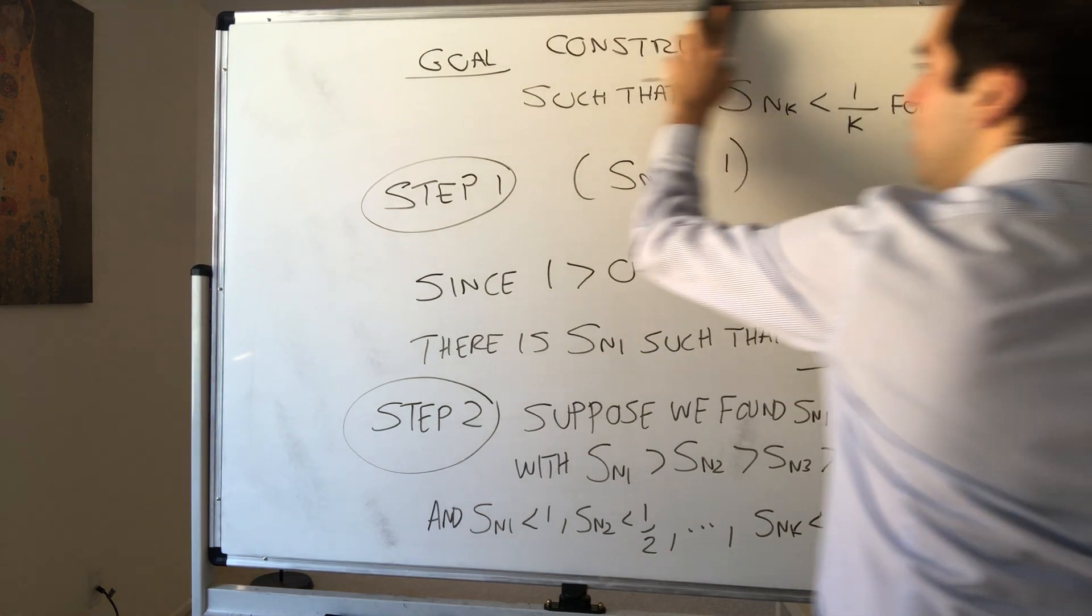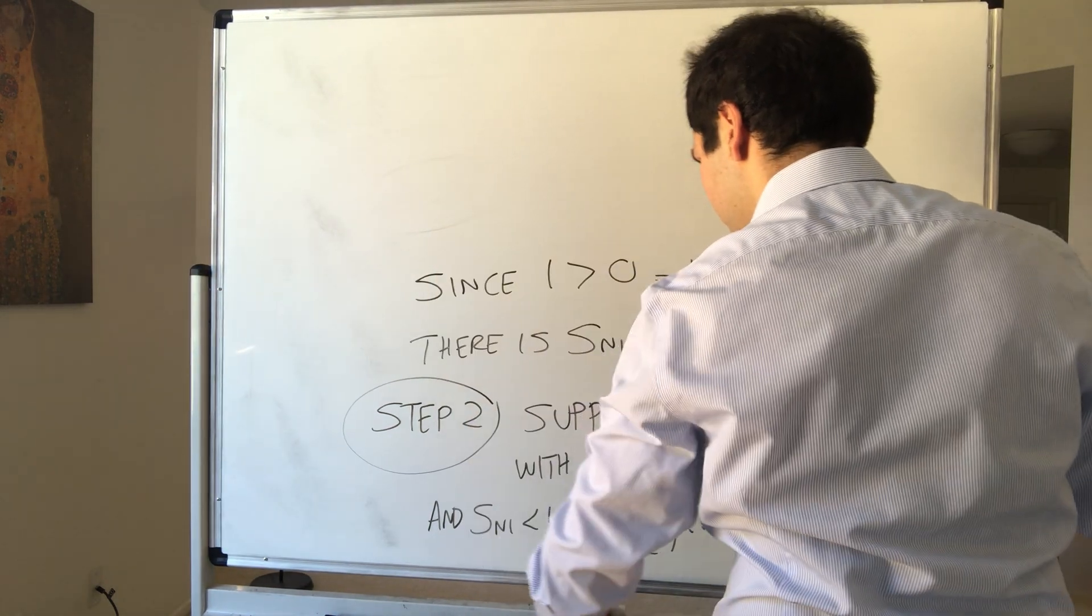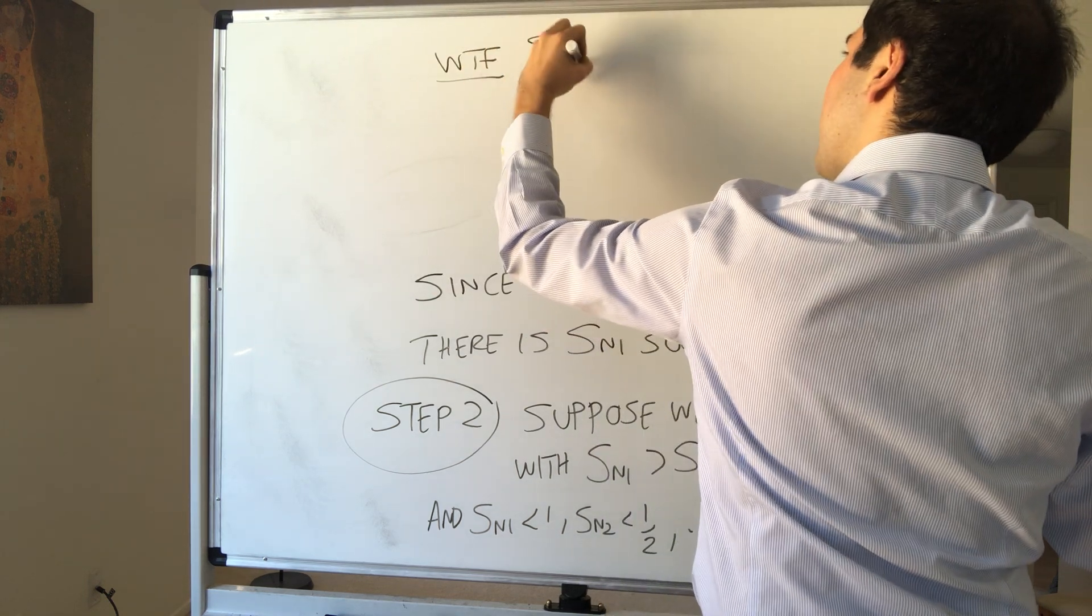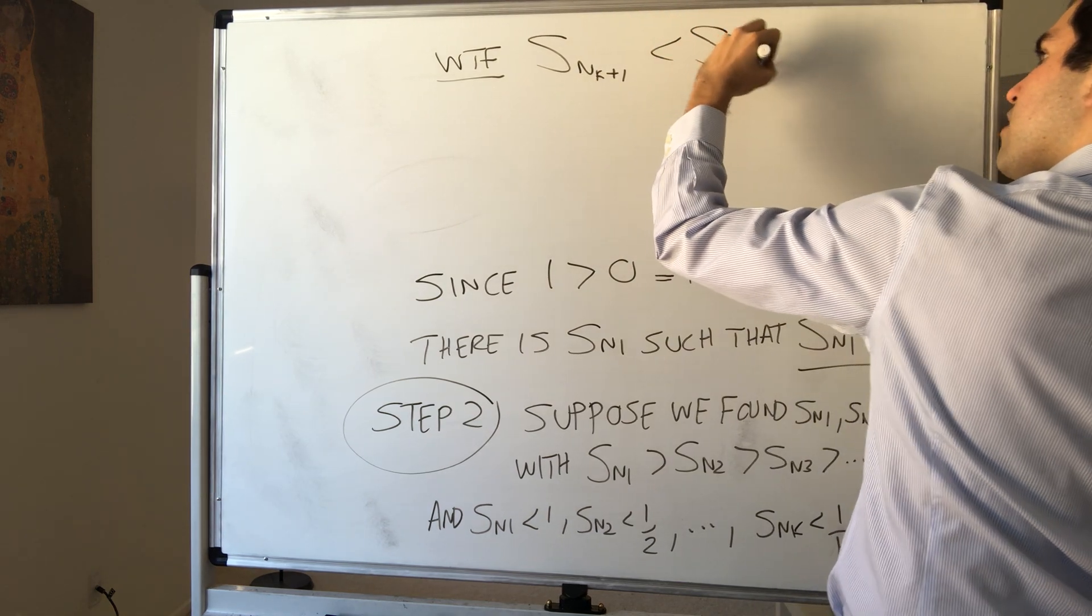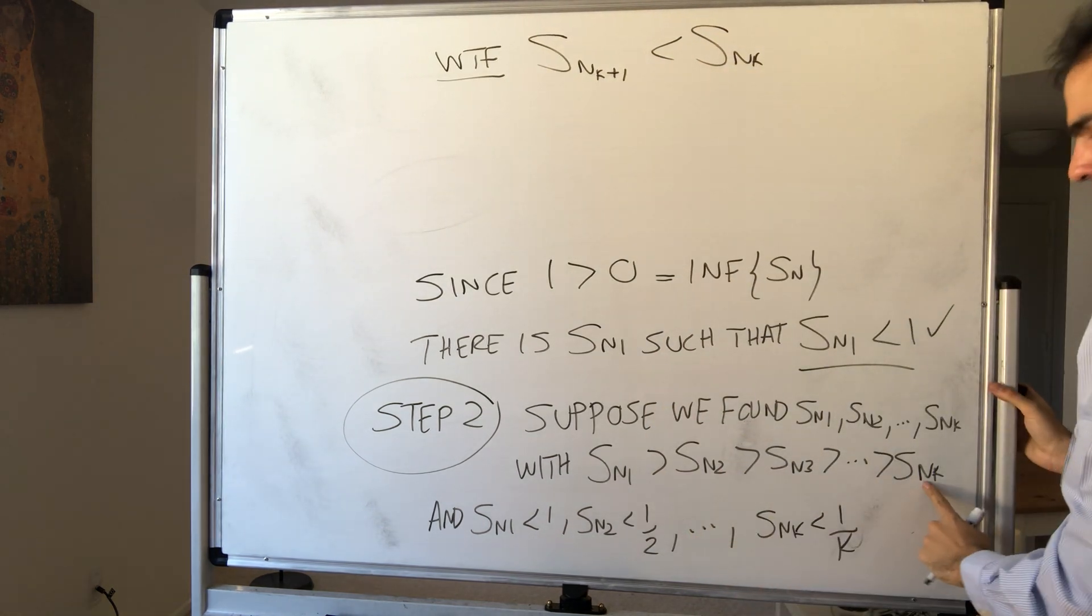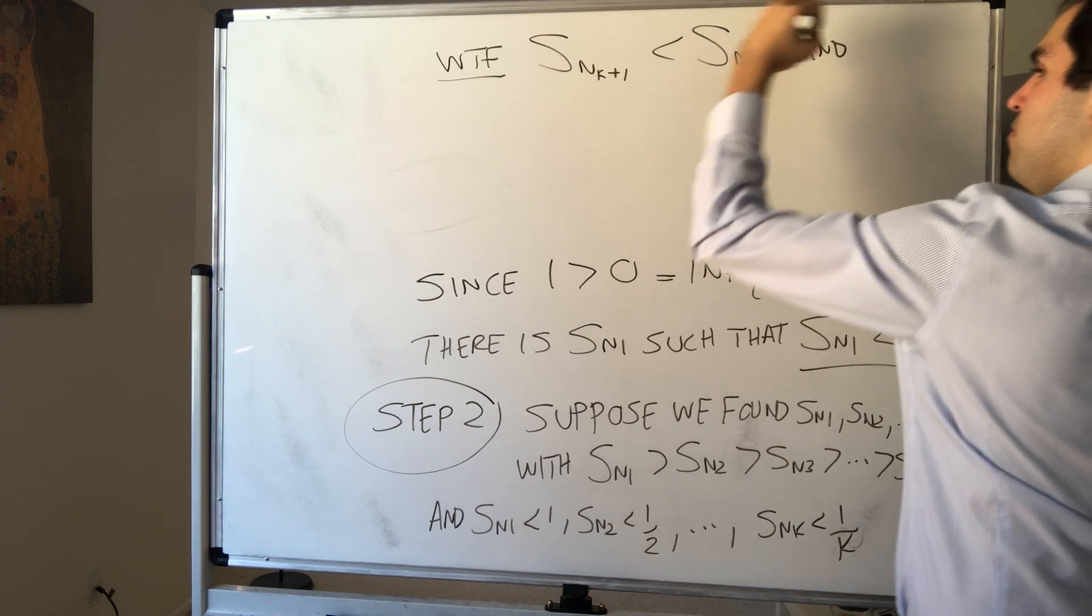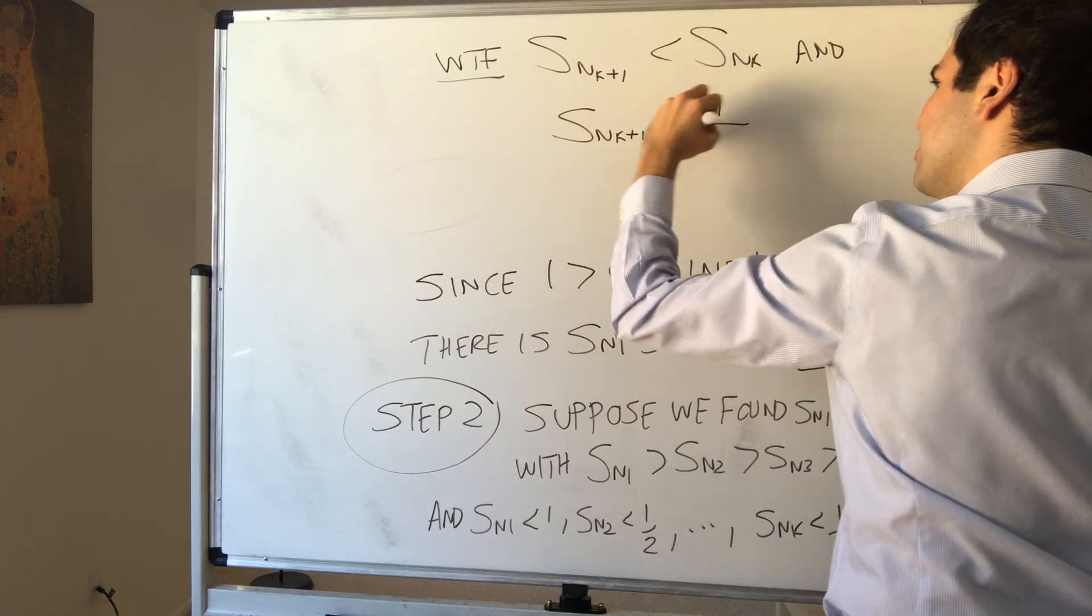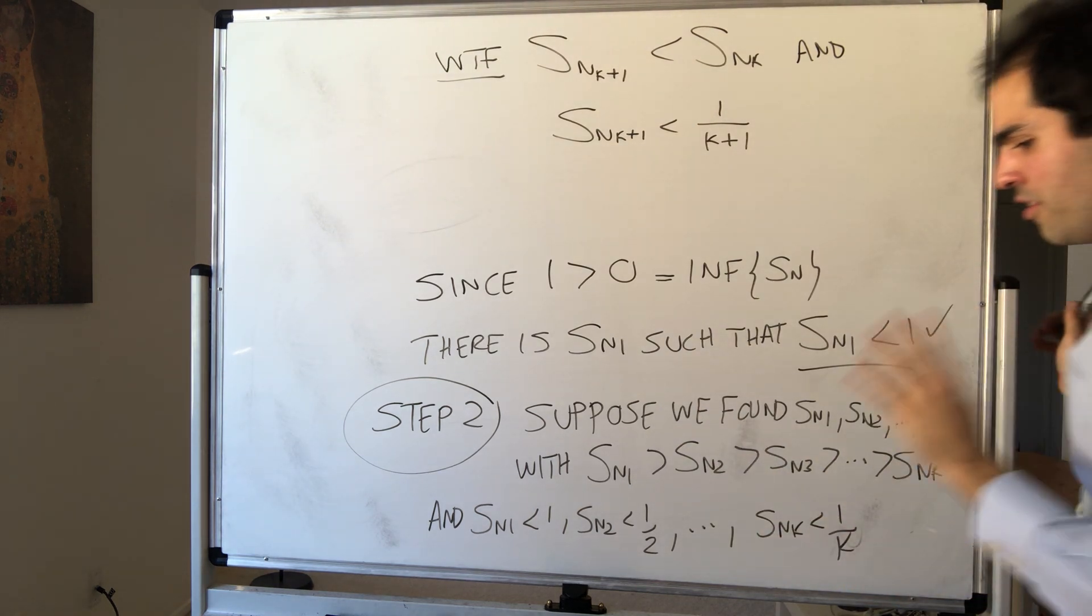Then what we want, we want to find Snk plus 1, that's smaller than all that. We want to find Snk plus 1, let's say smaller than Snk. So that's enough because Snk is the smallest of them all, and Snk plus 1 less than 1 over k plus 1. Okay, how do we do this?